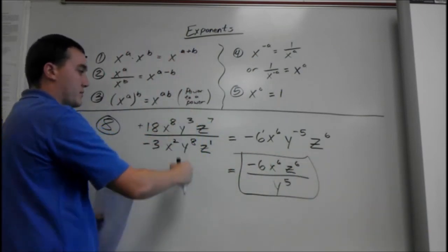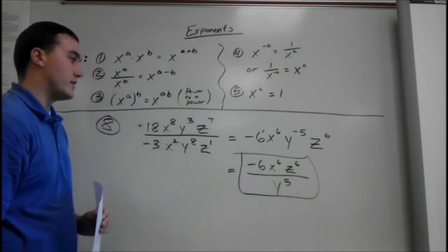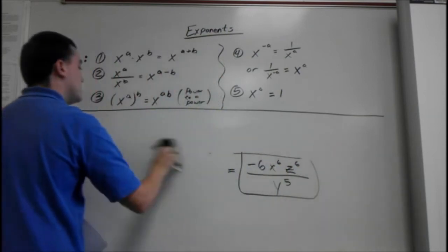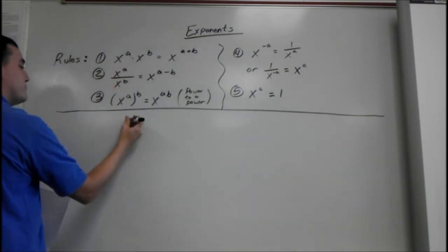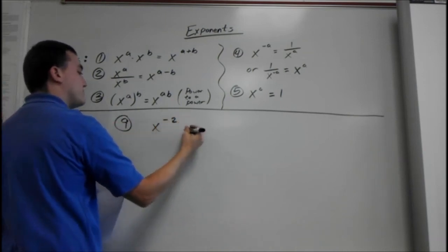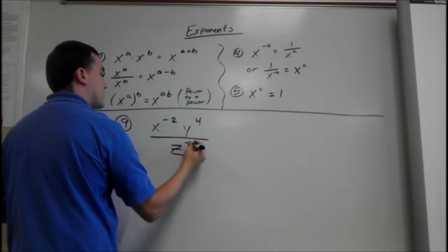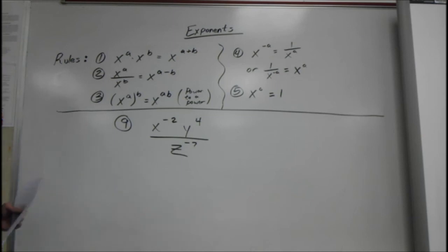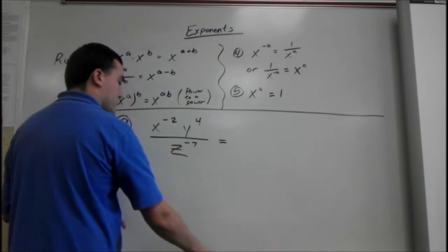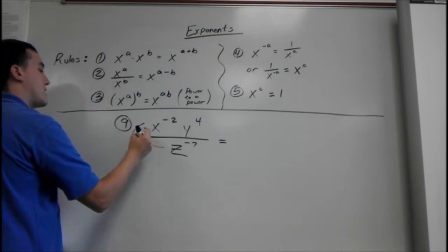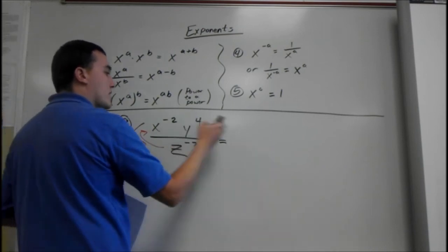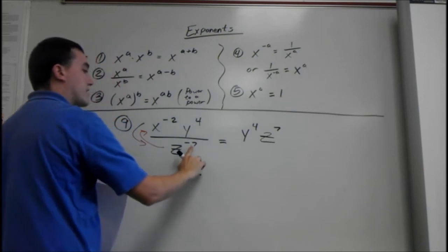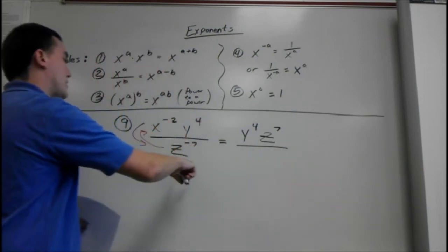Simplify first, subtract the exponents, then flip everything that needs flipping. Say we have x to the negative 2, y to the fourth, over z to the negative 7. Nothing to combine since x, y, and z are all different bases, but we can flip the negative exponents. x goes to the bottom, z comes to the top. So we get y to the fourth times z to the seventh on top, over x squared on the bottom — and the negative exponents become positive.